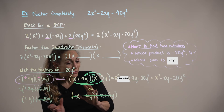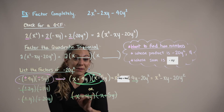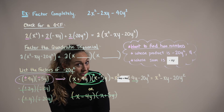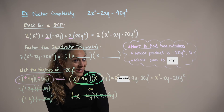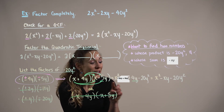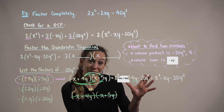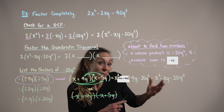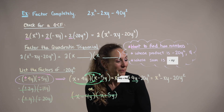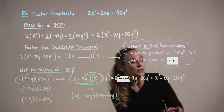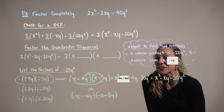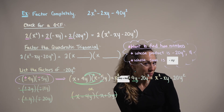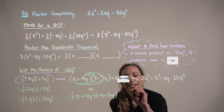I want to emphasize we won't always be this lucky. Sometimes we have to go through a couple of different cases before we find the right combination. But as long as you're multiplying your terms out, you'll eventually find the correct combination and you'll become faster at factoring over time. Now that we have confirmed the factoring formula for our quadratic trinomial, we can write our final answer.